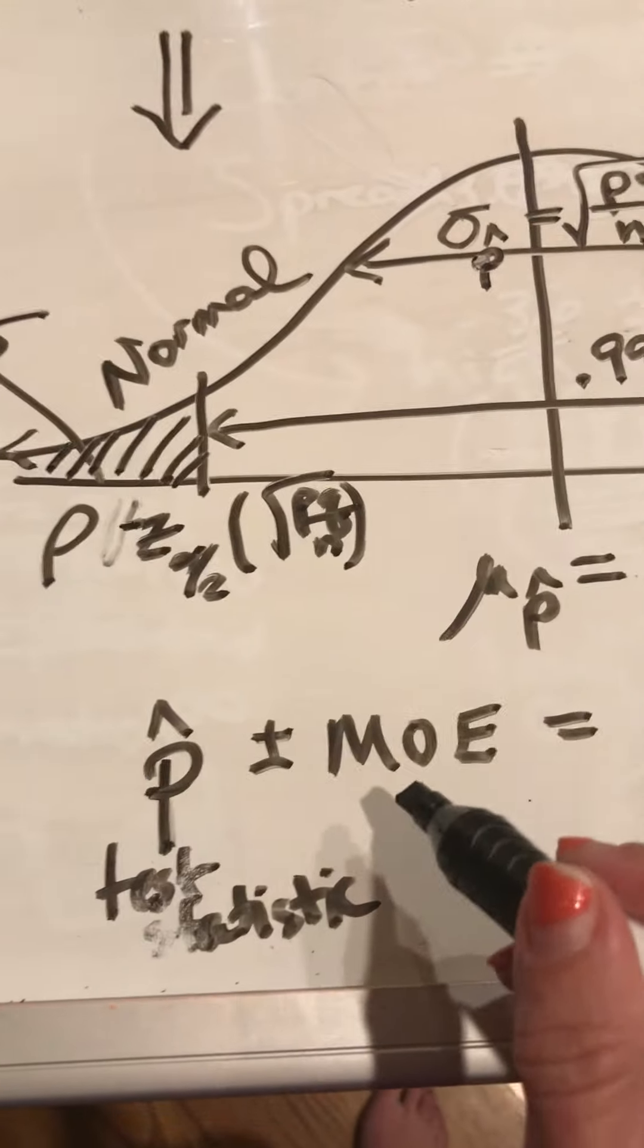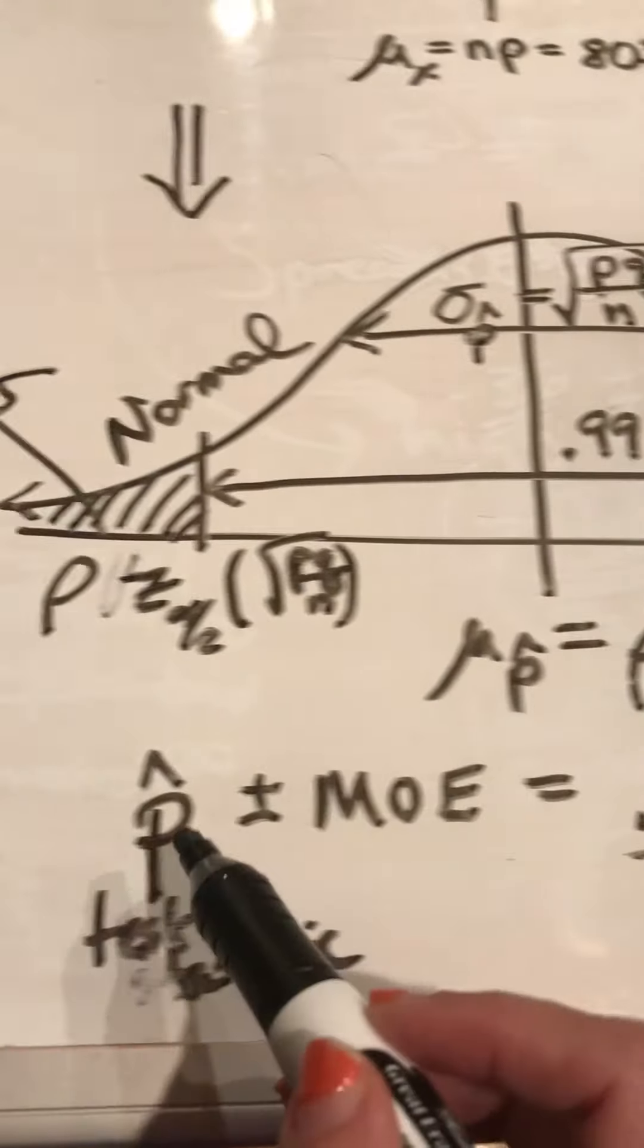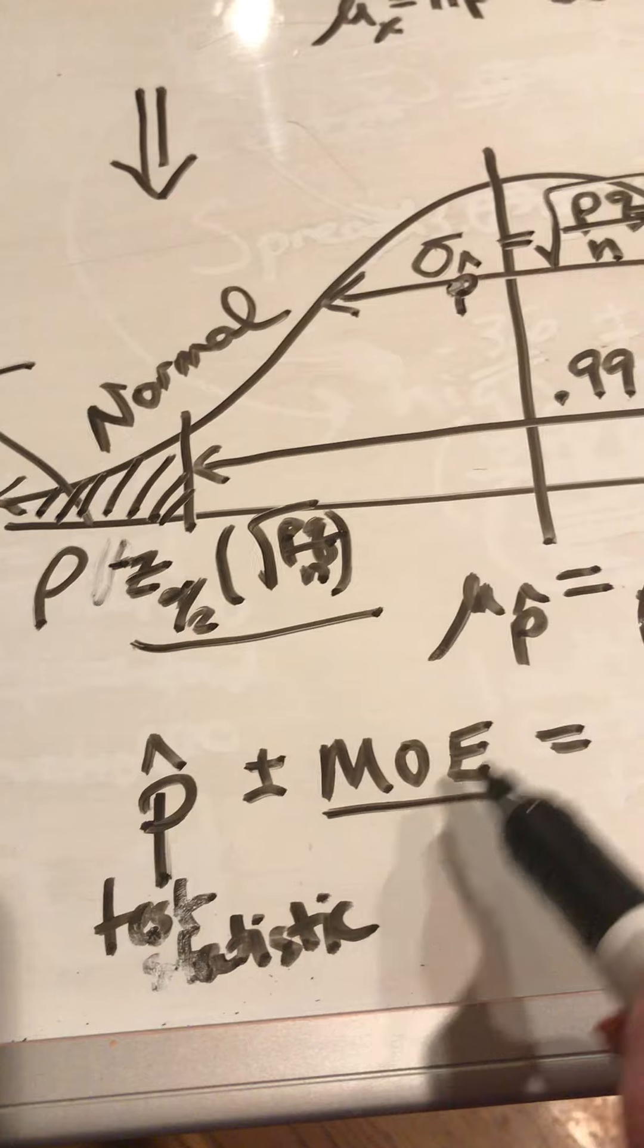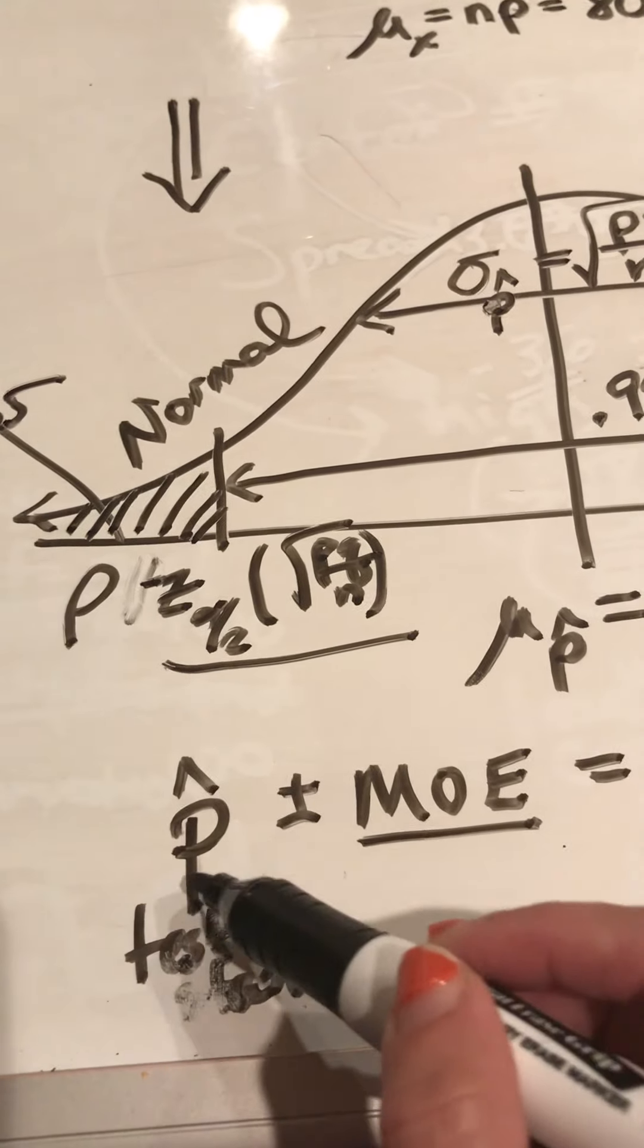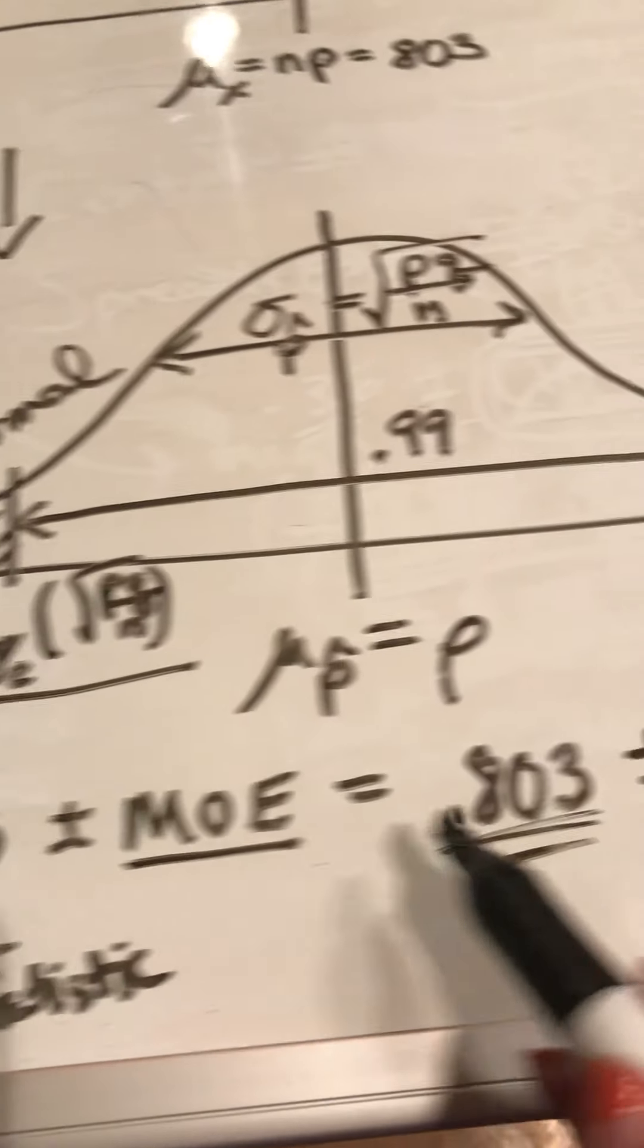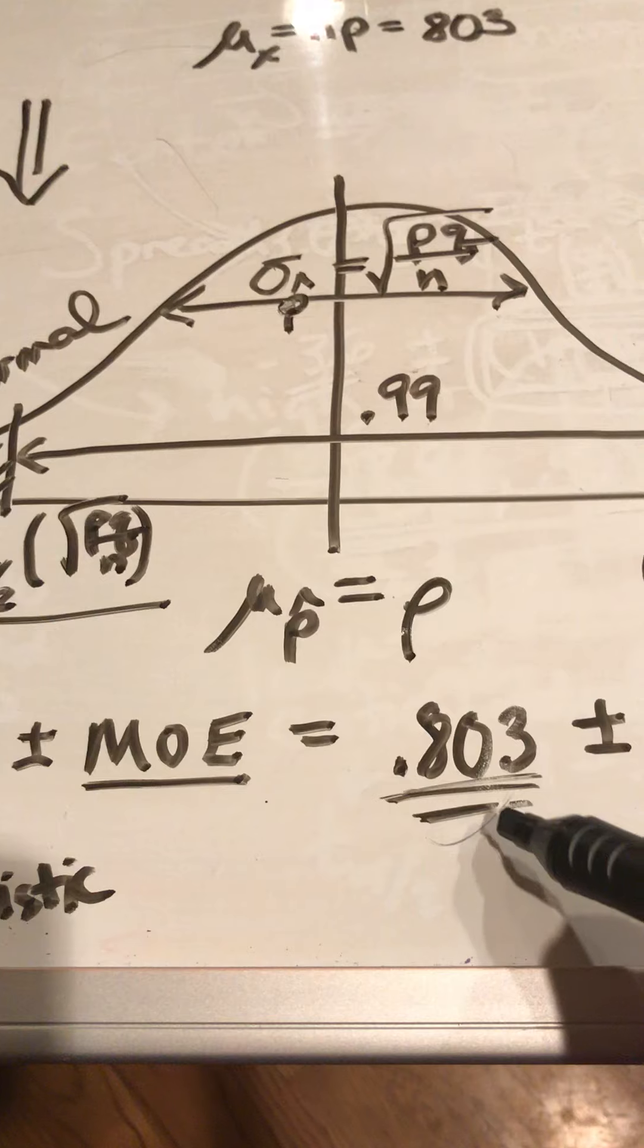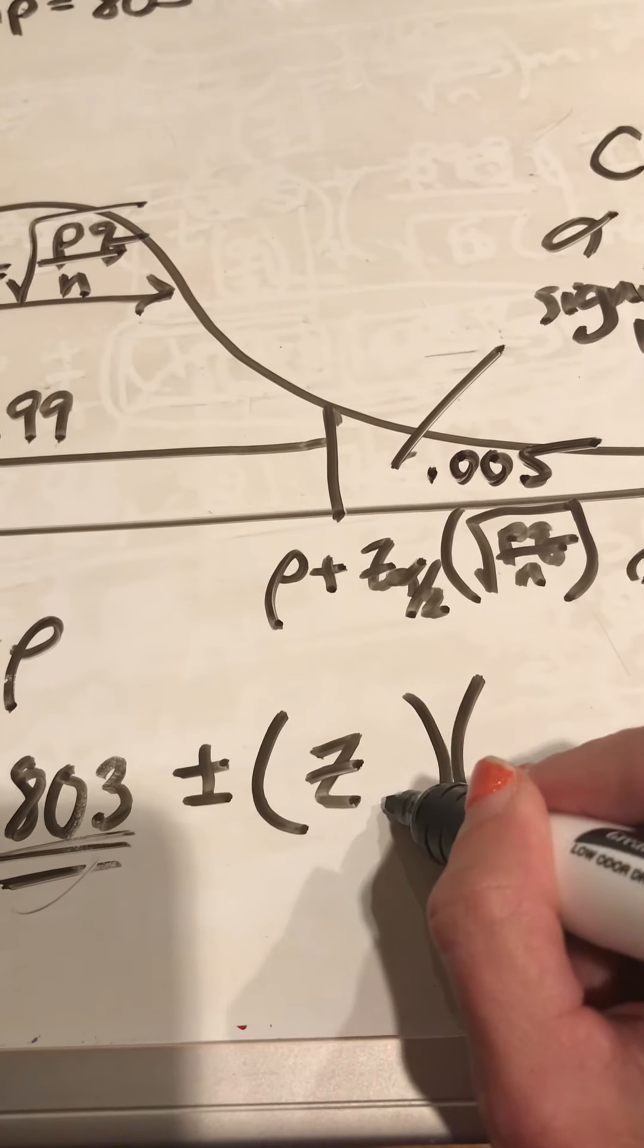The confidence interval is kind of symmetrically worded because if you start with the test statistic and add and subtract that same margin of error, then 99% of the time you would come up with a sample statistic so that rho would be in this interval. So our test statistic coming from my sample, 80.3% of my sample were on time, plus and minus this critical value.